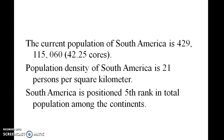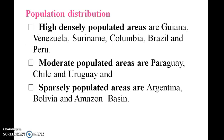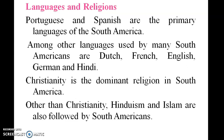Population and distribution: Highly densely populated areas include Guinea, Venezuela, Suriname, Colombia, Brazil, and Peru. Moderately populated areas include Paraguay, Chile, and Uruguay. Sparsely populated areas include Argentina, Bolivia, and the Amazon region. Languages spoken in South America include Dutch, French, English, German, and Hindi. Christianity is the dominant religion in South America.